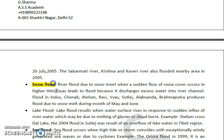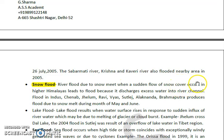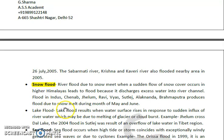Then we have snow flood, which is basically a modified example of river flood due to snow melt. In this case, there is a flow of snow melt in the higher Himalayas, leading to excessive discharge of water into the river channel. Rivers like Indus, Jhelum, Ravi, Beas, Sutlej, Alaknanda, and Brahmaputra produce floods due to snow melt, generally in the month of June.